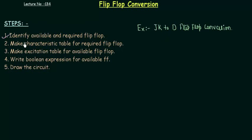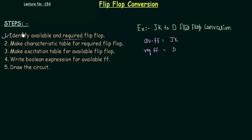Our first step is to identify the available and the required flip-flop. The available flip-flop in our example is the JK flip-flop, and the required flip-flop — what we want — is the D flip-flop. This step is very important because if you switch these, writing available as D and required as JK, everything changes and your answer will be 100% wrong.